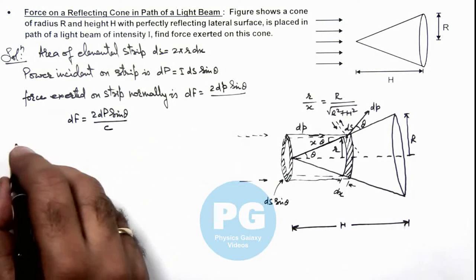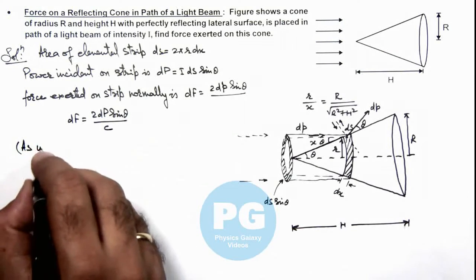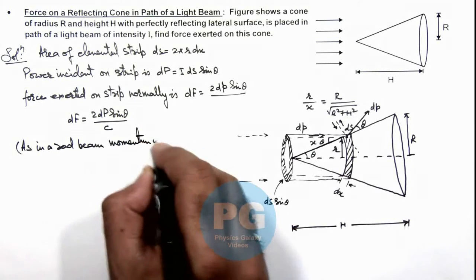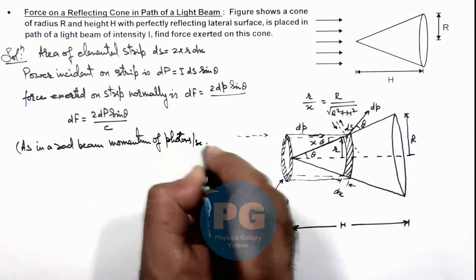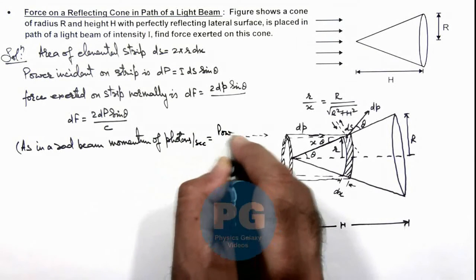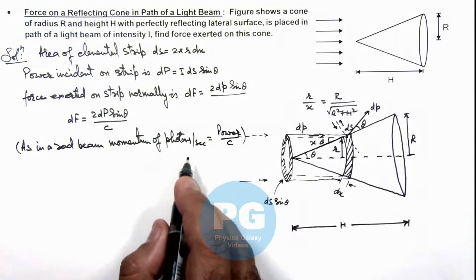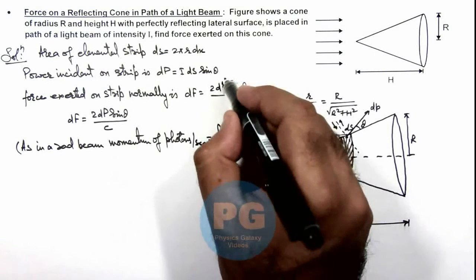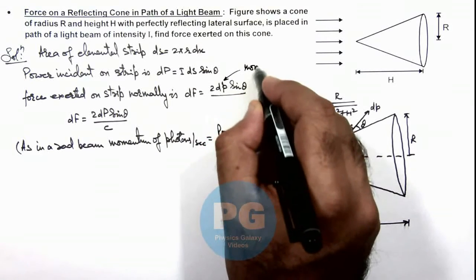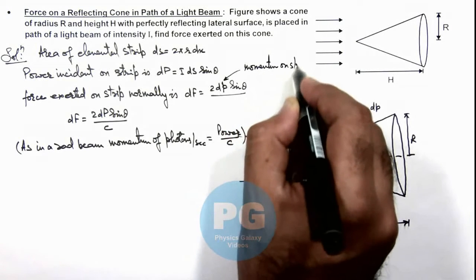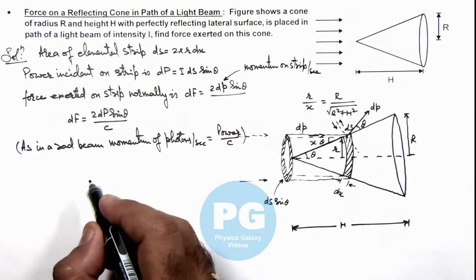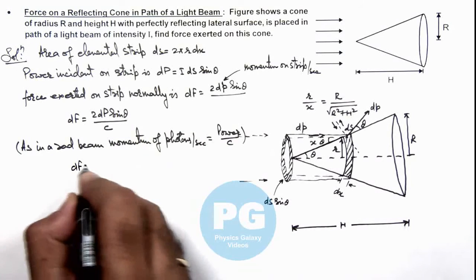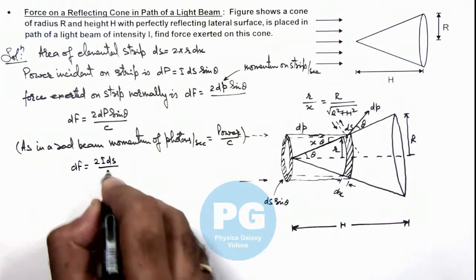In a radiation beam, the momentum of photons per second is equal to power divided by the speed of light. This we already discussed in concept videos. So dp, which is the momentum falling per second, can be written as d(capital P)/c. Here dp is the momentum on the strip per second.